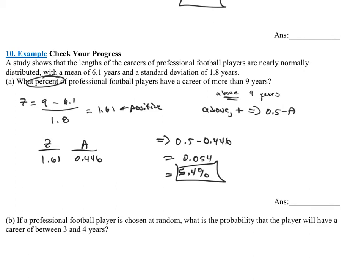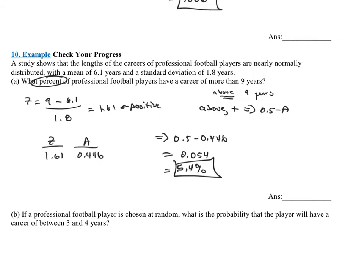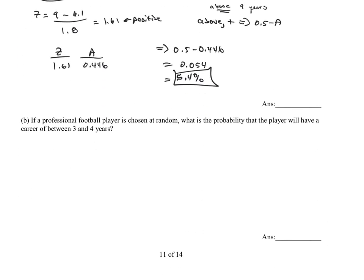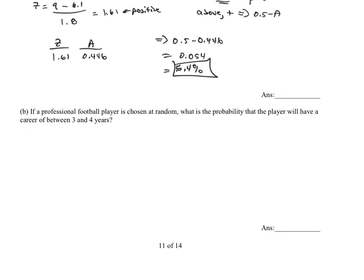Again, this is an approximation because it's nearly normally distributed, but that's an approximation. These are real numbers. This is real data. So that is for real. Only about 5% of football players, or 5 out of every 100 football players, make a career that lasts 9 years or more.